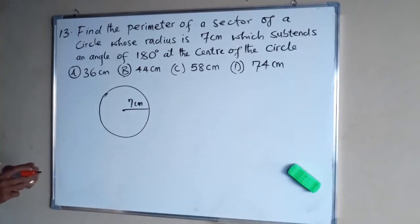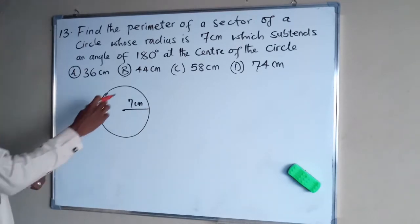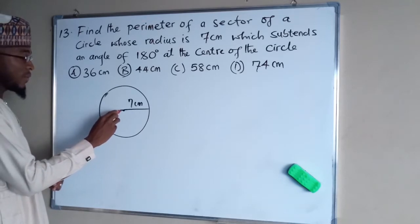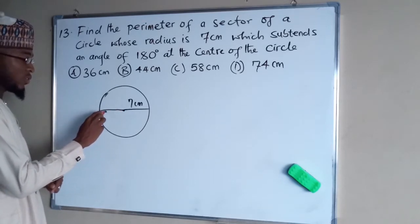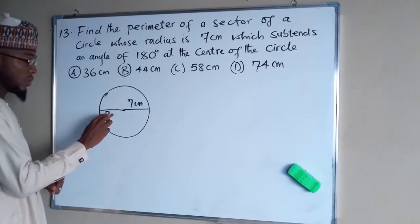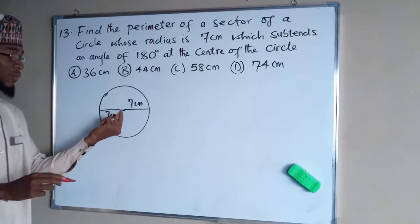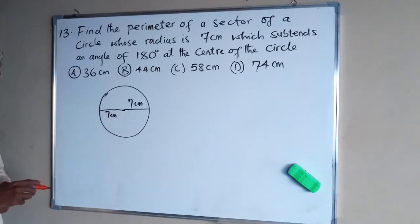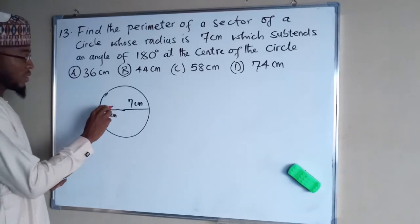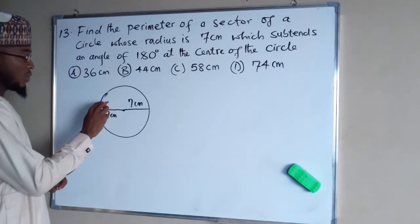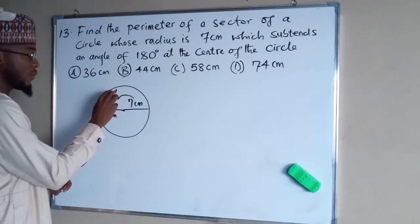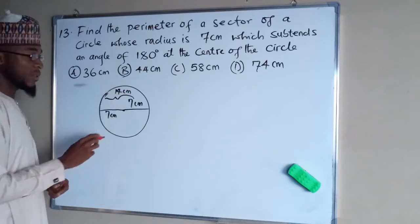This sector of a circle subtends an angle of 180 degrees, which means it is half of a circle. The radius is also 7 cm from the center to the other part of the circumference, so altogether the diameter is 14 cm.